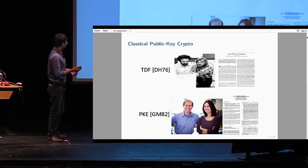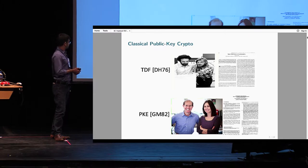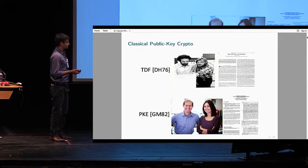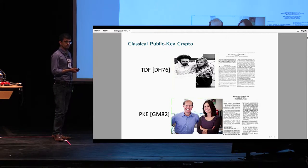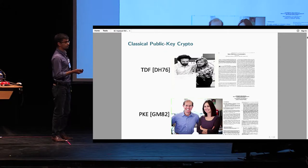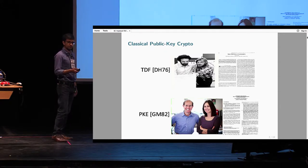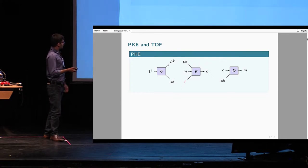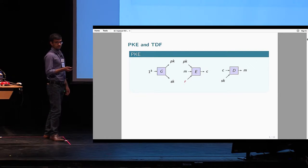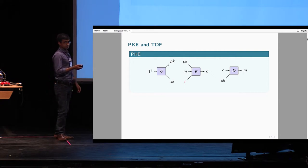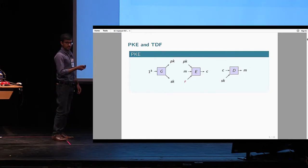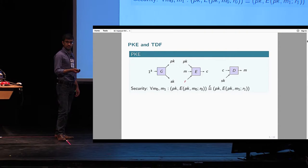Public key encryption was introduced in the RSA paper in the 1970s and later rigorously defined by Goldwasser and Micali in 1982. To set up the stage and notation for this talk, let me quickly go over these two notions. Public key encryption is given by three algorithms: G, E, and D — the key generation, encryption, and decryption algorithms. The key generation gives us a public key and a secret key, and you can encrypt a plaintext message M to a public key PK using some randomness R to get a ciphertext C, and decrypt with the right secret key.